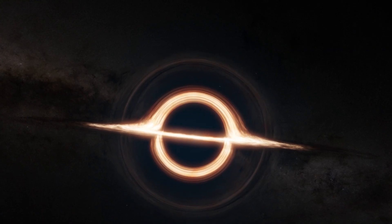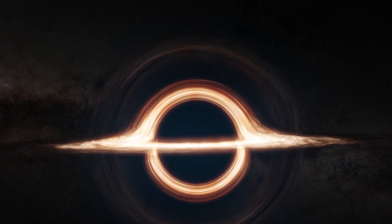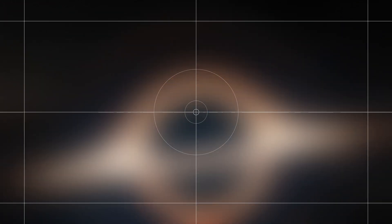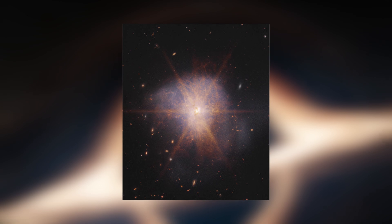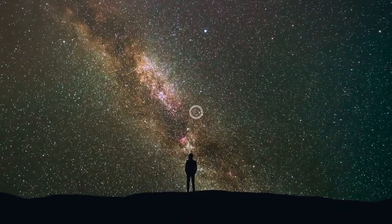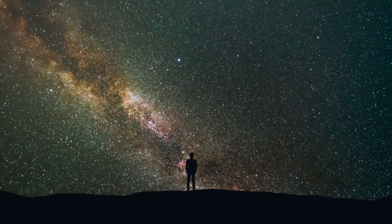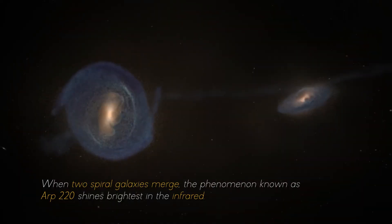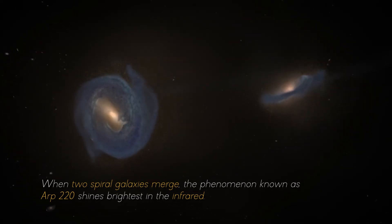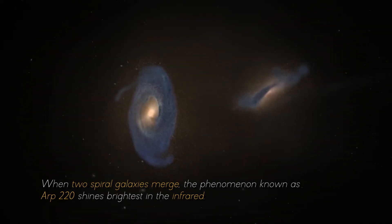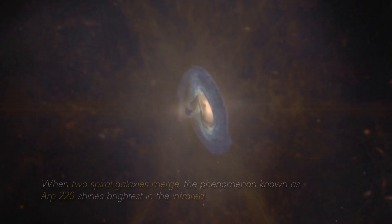NASA has made an exciting announcement about the galactic merger of ARP 220, which was captured by the James Webb Space Telescope. This impressive galactic merger can be seen shining among other galaxies in the night sky. When two spiral galaxies emerge, the phenomenon known as ARP 220 shines the brightest in the infrared.